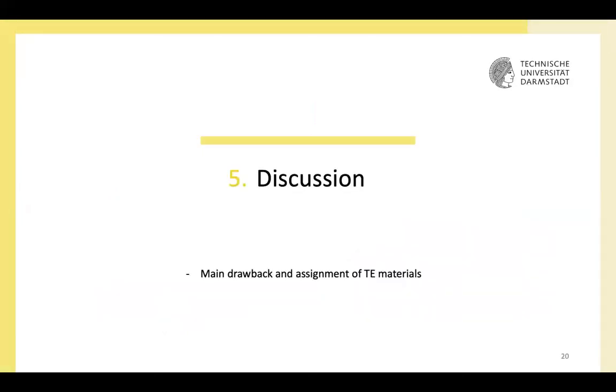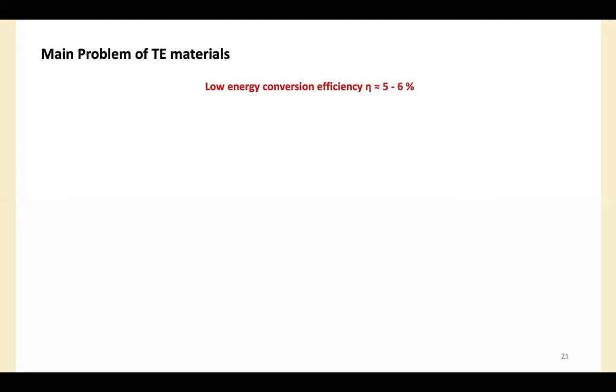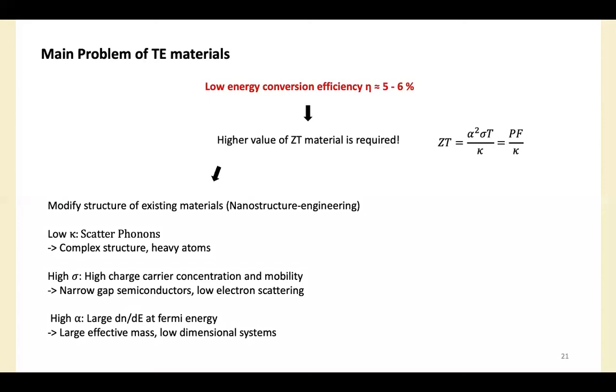Now we are going to discuss the main drawback and assignment of thermoelectric materials. Even though there are many advantages of thermoelectric materials, the main drawback is low energy conversion efficiency, which is around 5 to 6 percent. To improve efficiency, we need higher ZT materials. We can either modify the structure of existing materials or find a new material. My topic for today belongs to the former case. Kappa can be lowered by complex structure and heavy atoms due to phonon scattering. And electrical conductivity can be improved by doping.